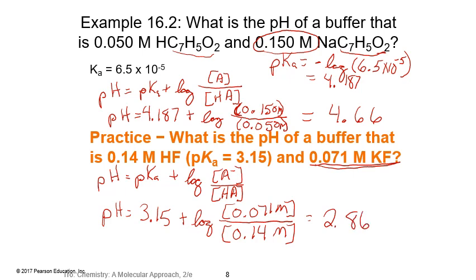Okay, so you'll notice here that because there was more acidic form than basic form, our pH is lower than the pKa. In the first example that we did, there was more basic form than acidic form, and our pH was higher than the pKa. So that's something just to keep in mind to check your work.